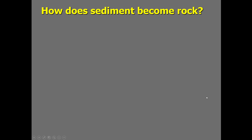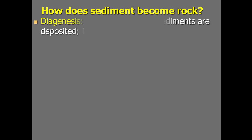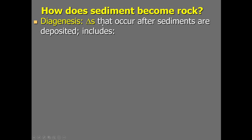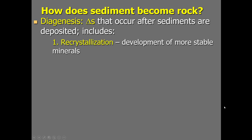Sediment becomes rock in a few steps. The first of those steps — which includes all changes that occur after sediment is deposited — is called diagenesis. This lowercase delta symbol means 'change.' Some of the changes that can occur after sediment is deposited include recrystallization of unstable minerals.